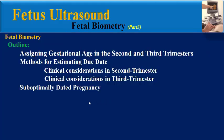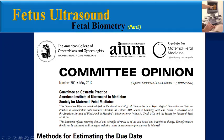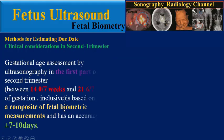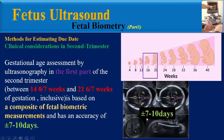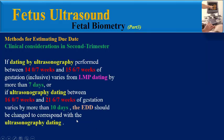Now, methods for estimating due date. This paper was published in 2017 by a committee consisting of the American College of Obstetricians and Gynecologists, the Association for Medical Ultrasound (AIUM), and the Society for Maternal-Fetal Medicine. Regarding clinical consideration in the second trimester: gestational age assessment by ultrasonography in the first part of the second trimester — between 14 weeks and 21 weeks of gestation — is based on a composite of fetal biometric measurements and has an accuracy of plus or minus 7 to 10 days.